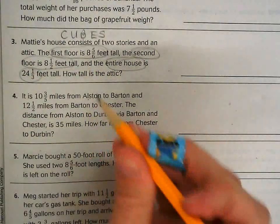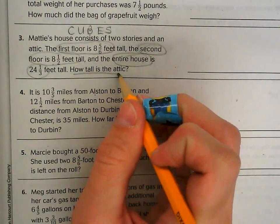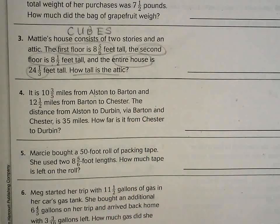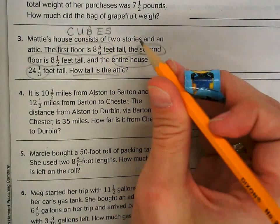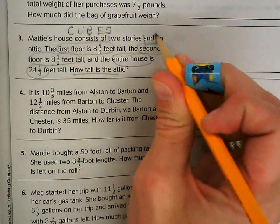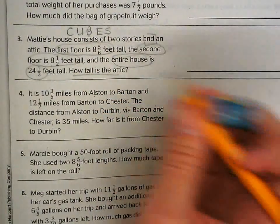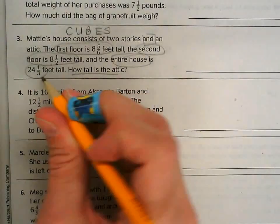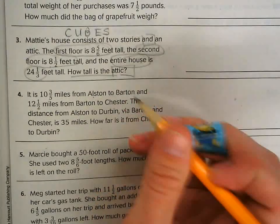Now I need to do U, underline. The question says, how tall is the attic? Now I'm going to box my operation word. I know I have two stories and an attic, and I need to find out the entire house is 24 and 1/3, so I'm trying to figure out how tall the attic is.